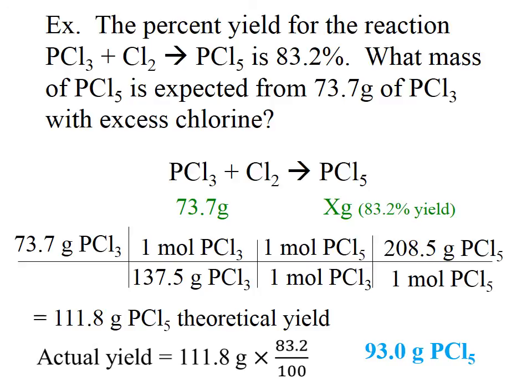What we need to remember is that our actual yield is what we've measured from the reaction, and our theoretical yield is calculated from our balanced chemical equation. To calculate percent yield, we need the actual yield divided by the theoretical yield times 100. Alright, that takes us to the end of this video — until next time, I'm out. Blessings.